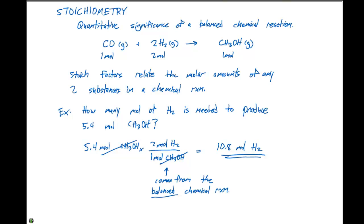This is why we spent a decent amount of time balancing chemical reactions — because the balanced chemical reaction allows us to determine how much of a particular product is produced and how much reactant we need to produce that amount of product.